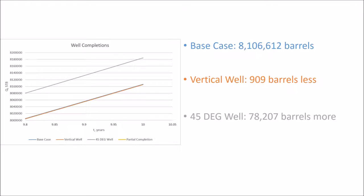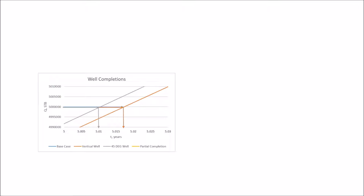If we zoom in closer, it would appear that only two lines exist, but rather the base case and vertical well lines are nearly identical. If we neglect our stock tank oil initially in place number and assumed production for 10 years, then the vertical well only produces 909 barrels less than that of the base case. This isn't shocking since there's only a 6.4 degree difference between the two. The 45 degree well stands out and would produce over 78,000 barrels more than that of the base case.